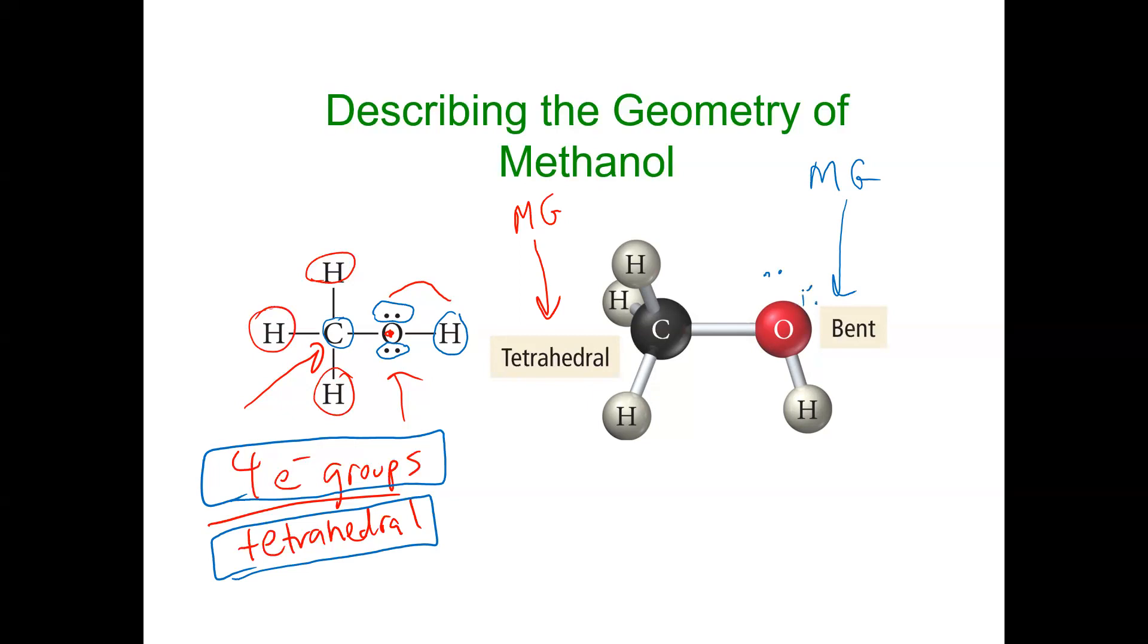So remember, we don't see these lone pairs when we're just looking at the molecule. All we see is this bent shape. And that also, as the last video indicated, distorts the bond angle.